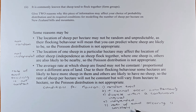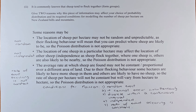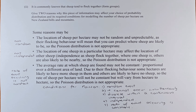Last but not least, we consider condition five: the rate of event occurring is constant. The average rate at which sheep are found may not be constant over different areas of land. Due to their flocking behaviour, some hectares are more likely to have more sheep while others may have none. So the rate of sheep per hectare will not be constant, and therefore the Poisson distribution is not appropriate.